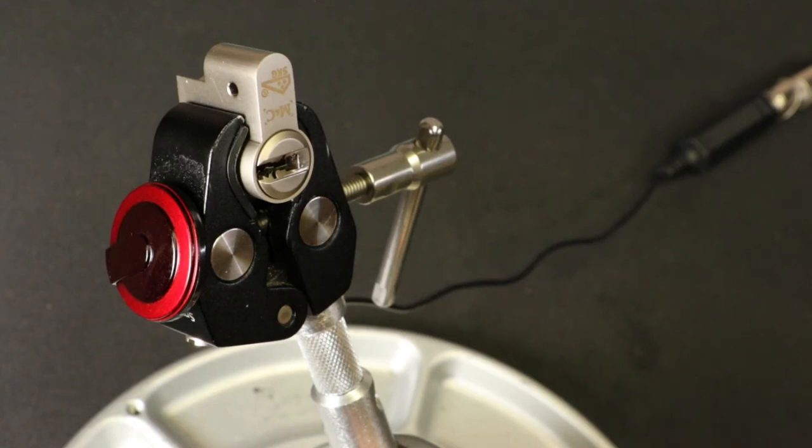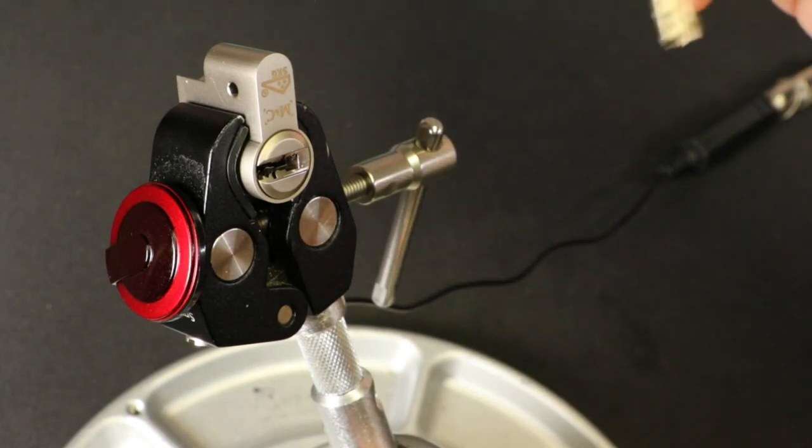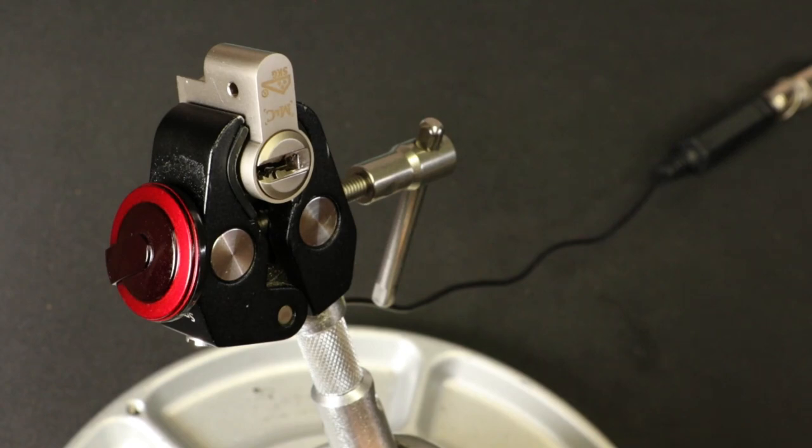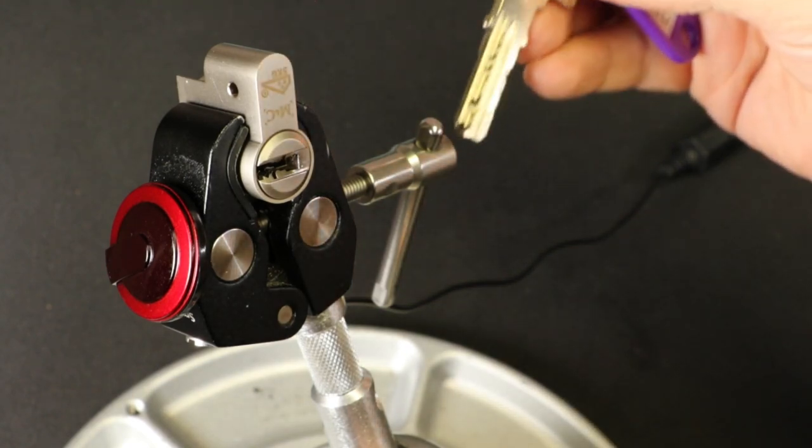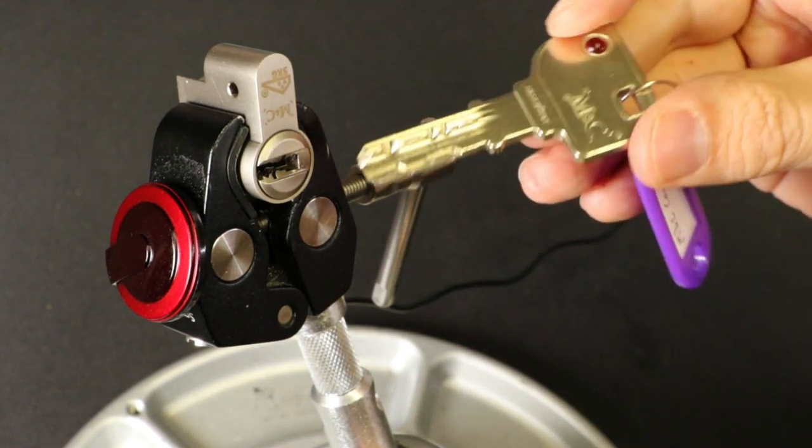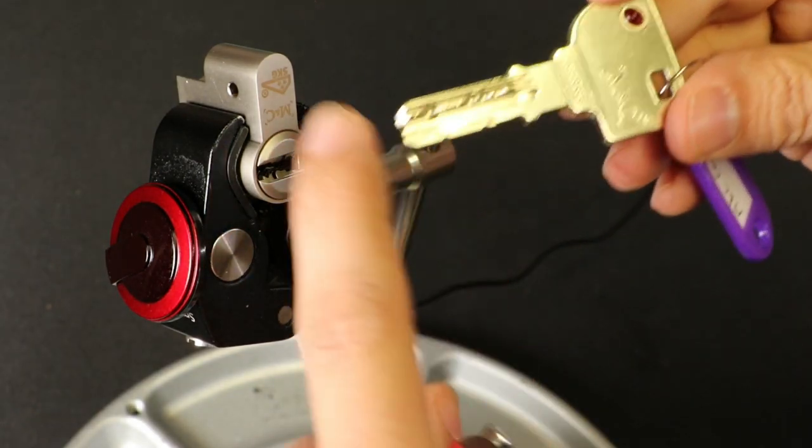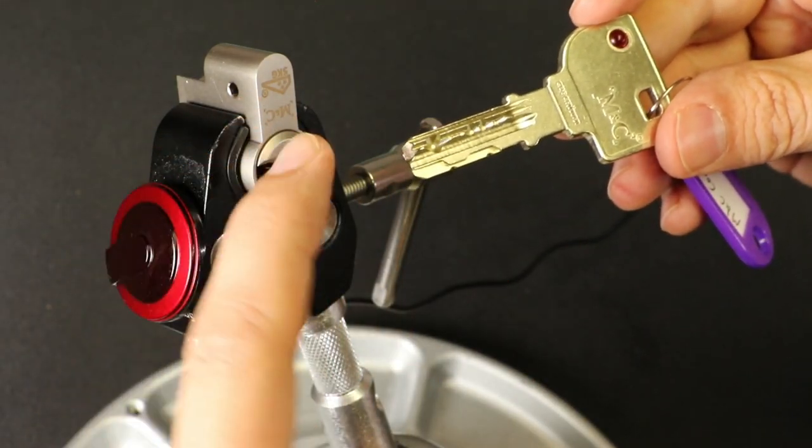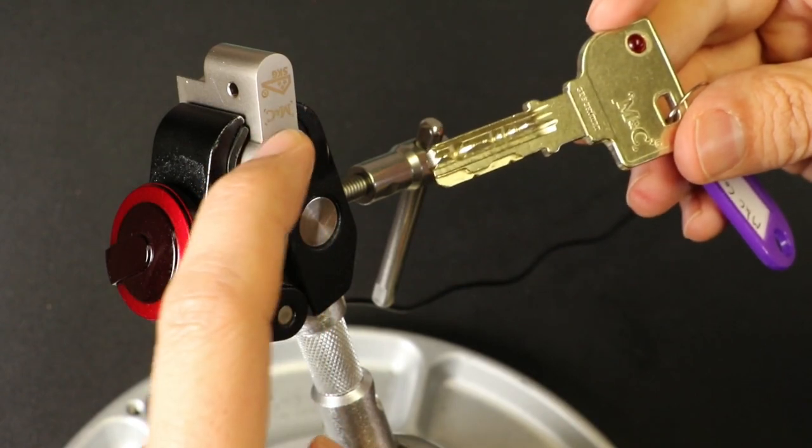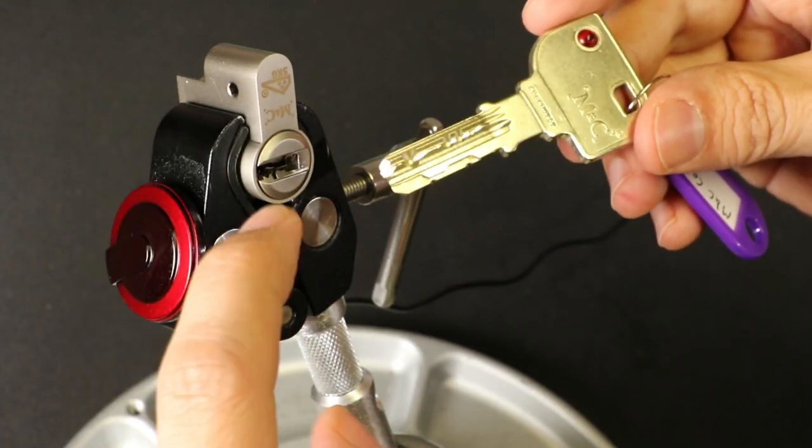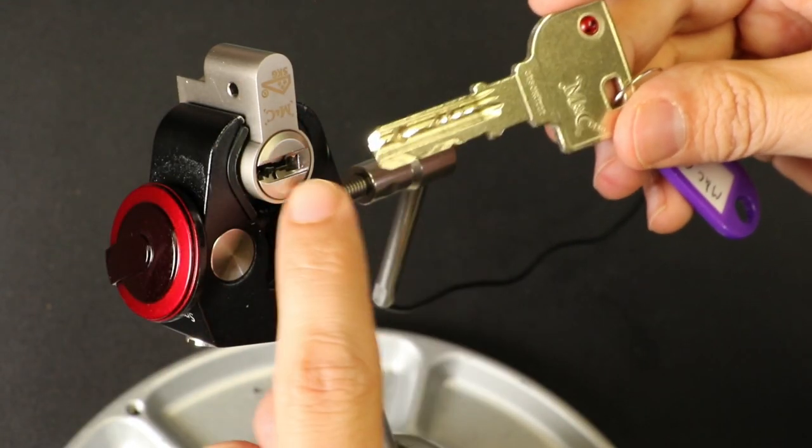All right, we got the third of the four M&C locks here. This one is a lot like the last one I picked, the Matrix SKG 3 Star, except that it's now in dimple format. So it's got the five pins up top that have tapered key pins and then that spooled driver pin on all five. And then it has five sliders as well.